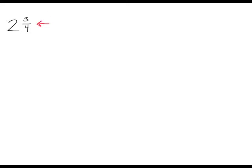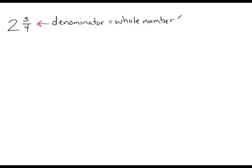To change this from a mixed fraction to an improper fraction, first we're going to take the denominator and multiply that by the whole number. And to that, we're going to add the numerator.